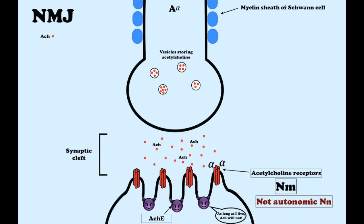Non-depolarizing muscle relaxants inhibit the action of acetylcholine at the neuromuscular junction by binding competitively to the alpha subunit of the nicotinic acetylcholine receptor on the postjunctional membrane. They act as surmountable blockers; thus the blockade can be overcome by increasing the amount of agonist, which is acetylcholine, in the synaptic cleft. The effect of these drugs can be reversed by cholinesterase inhibitors. When reversal takes too long or patients start to breathe irregularly while waking up, we use cholinesterase inhibitors to synchronize breathing or speed up awakening.